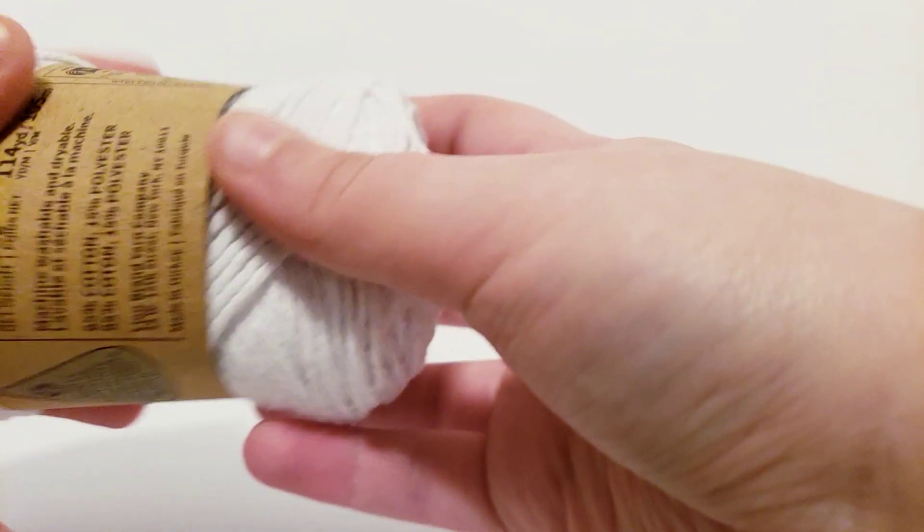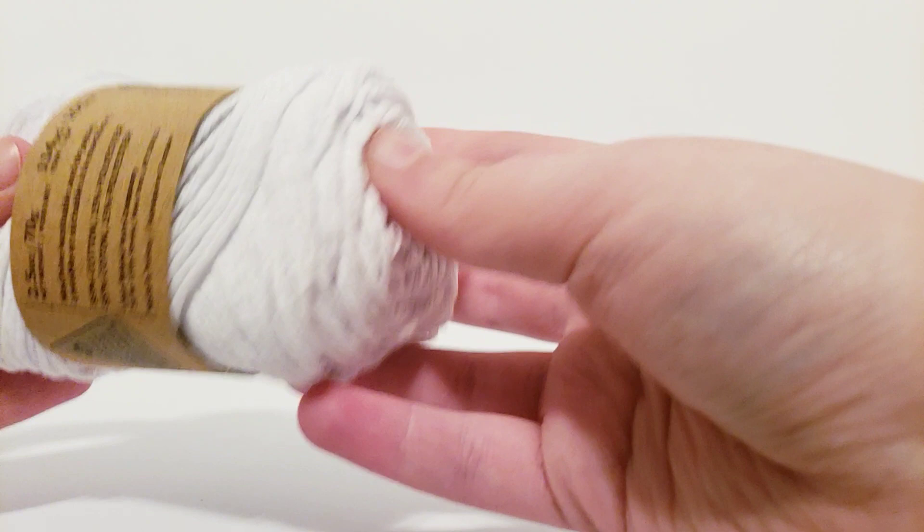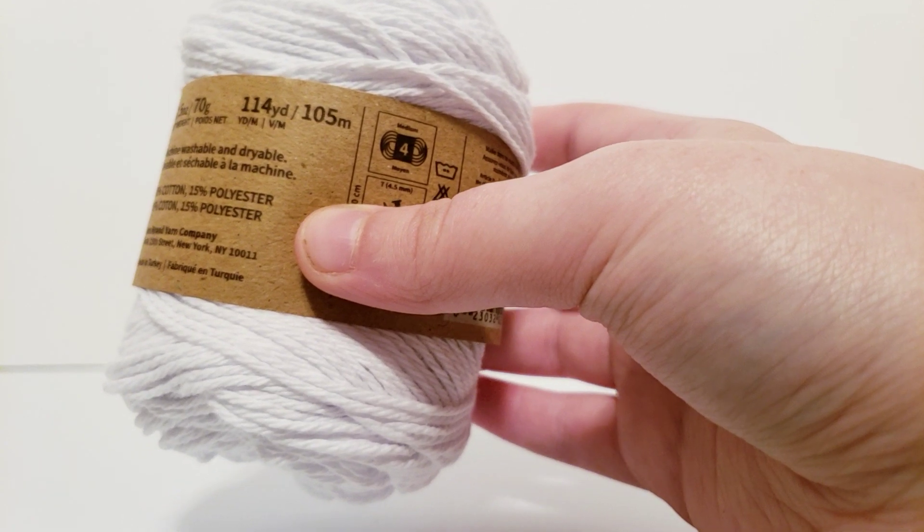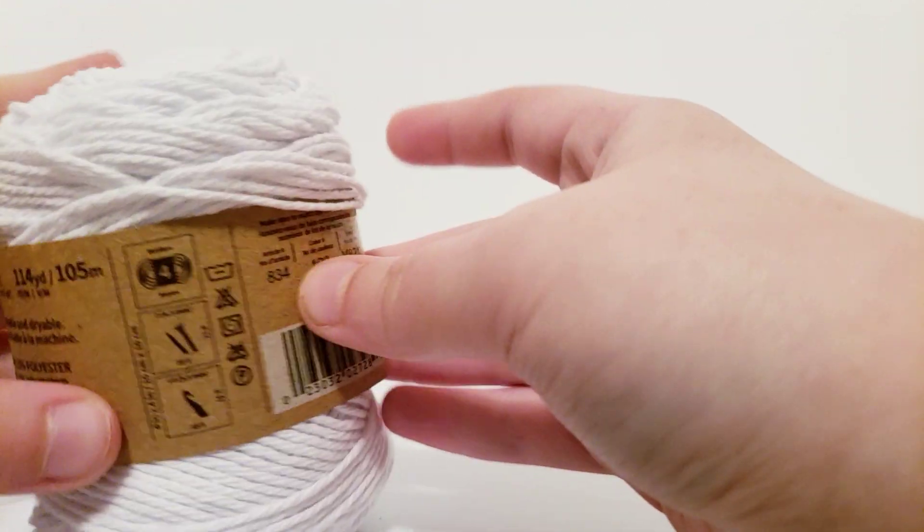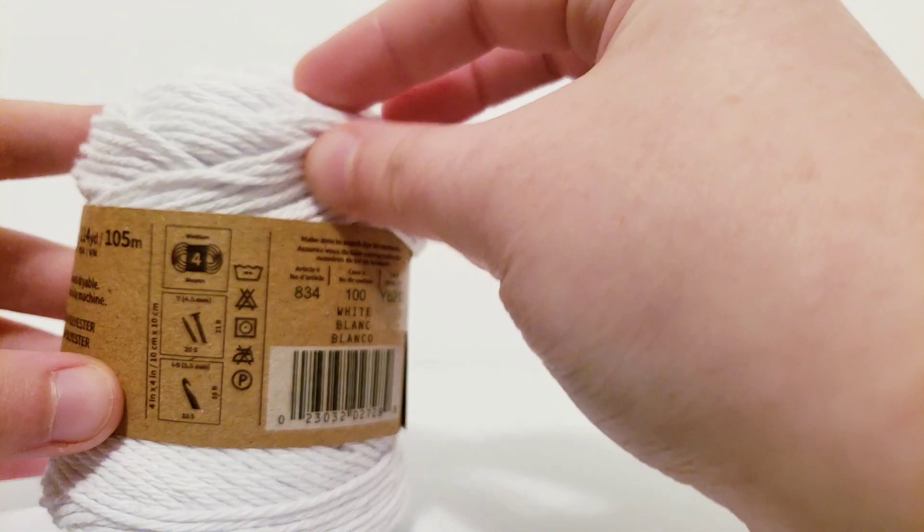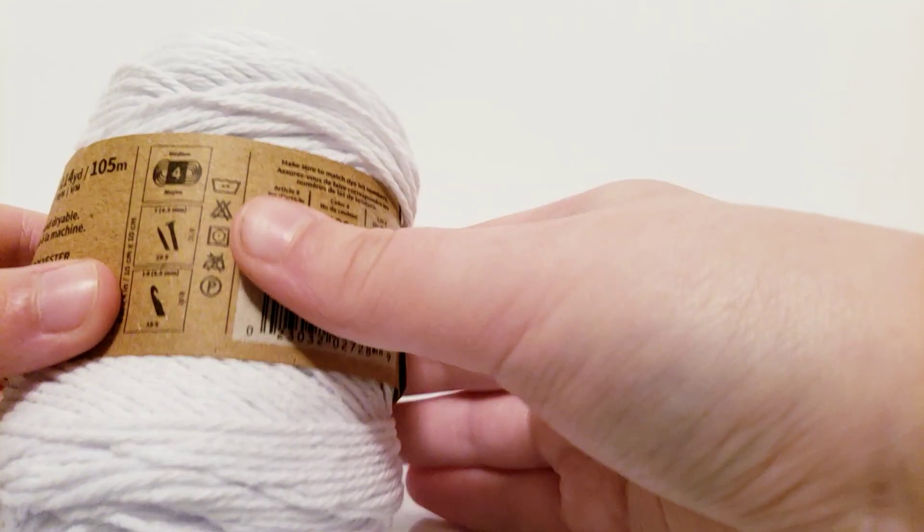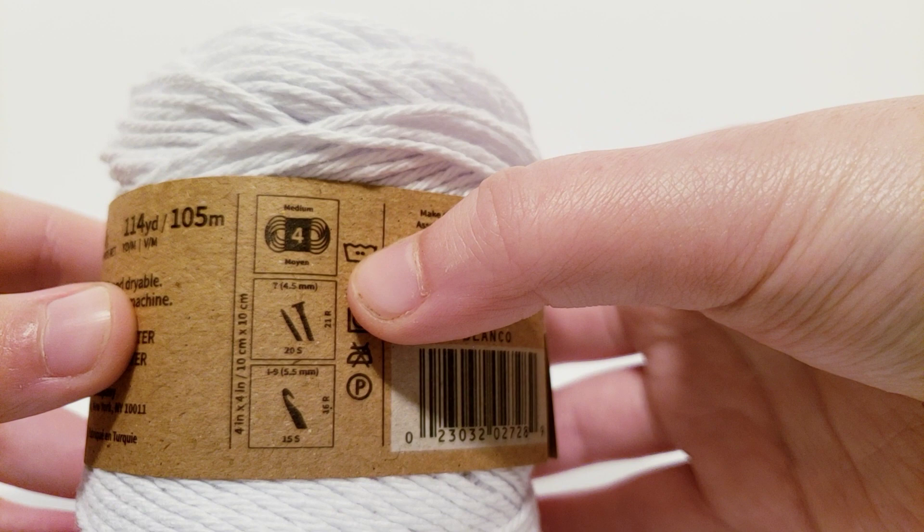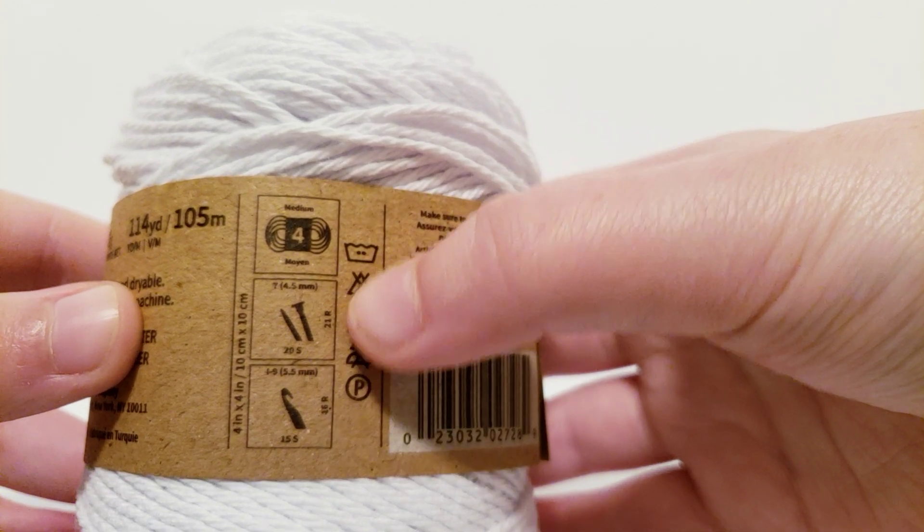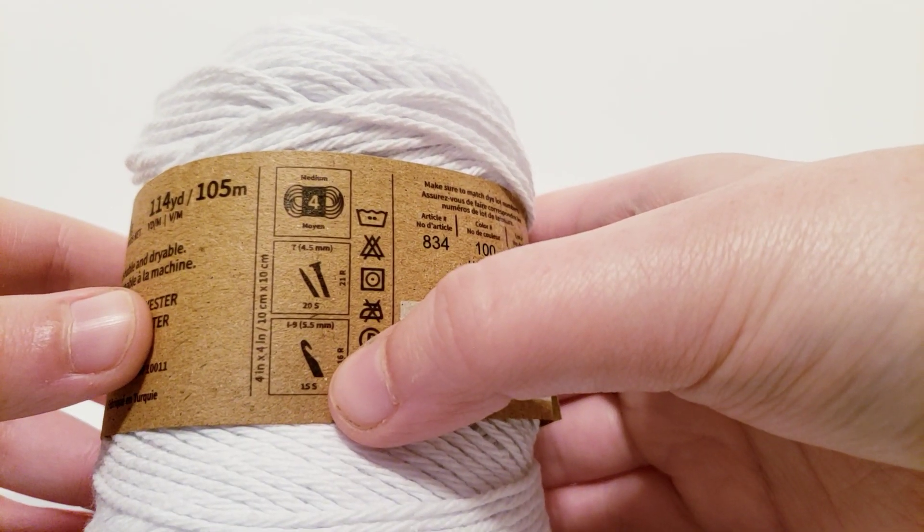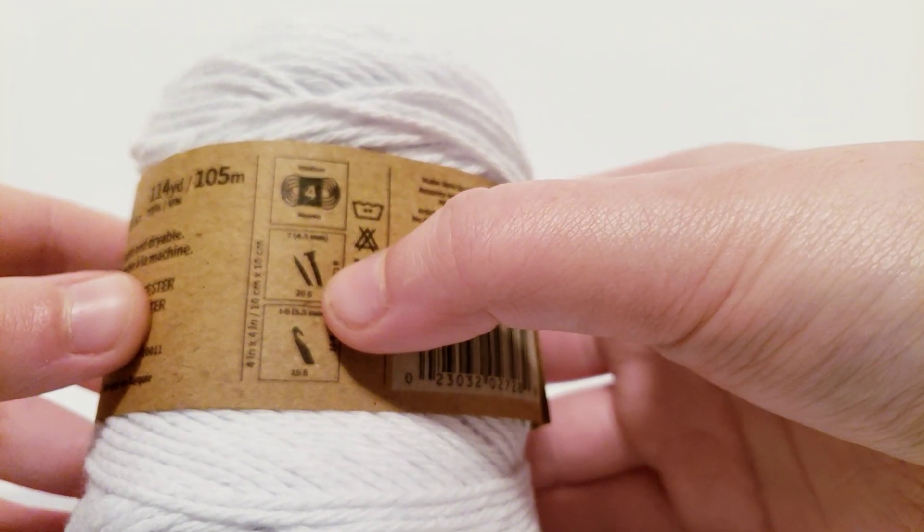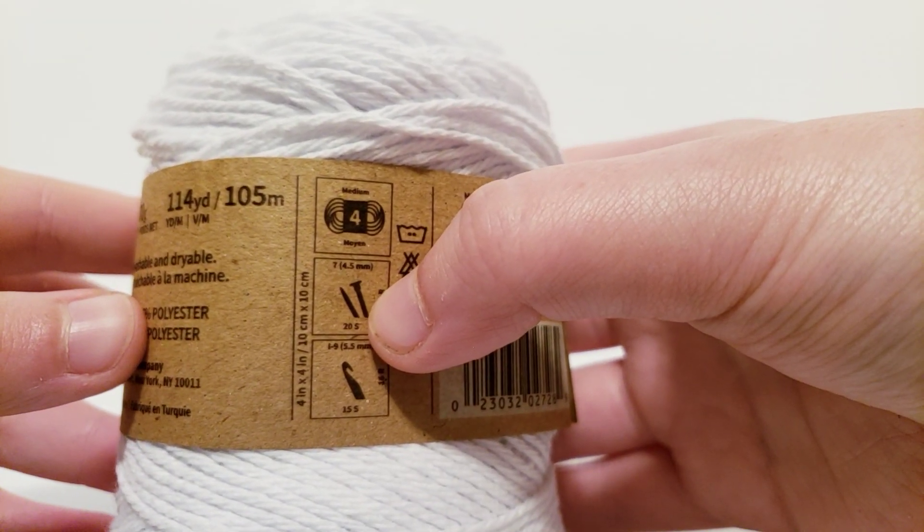I figure the 15% polyester is what makes it so soft because it's a lot softer than most skeins of cotton that you find. I really like this. It's really soft to the touch. Now it is considered a number 4 weight yarn. The recommended crochet hook is a size I and the recommended needle is a size 7.